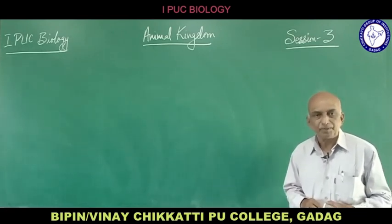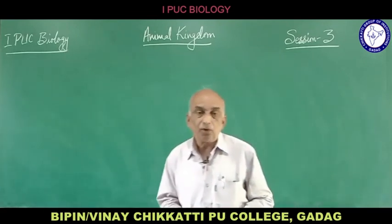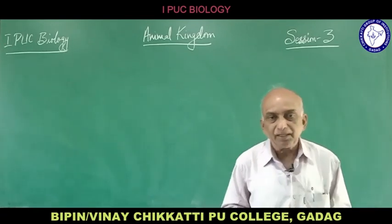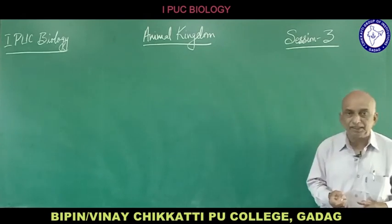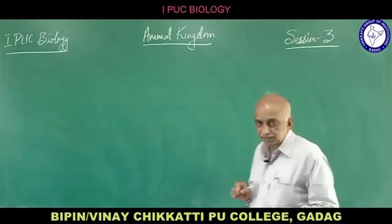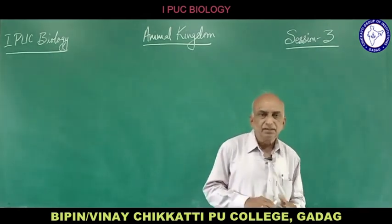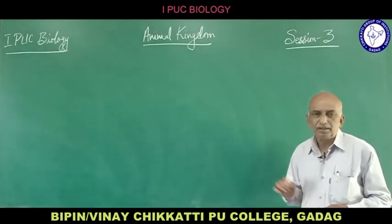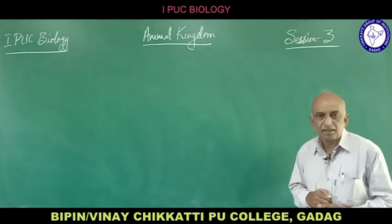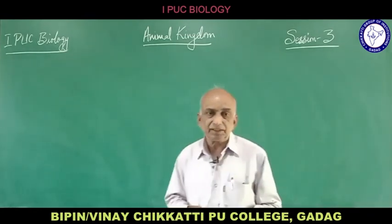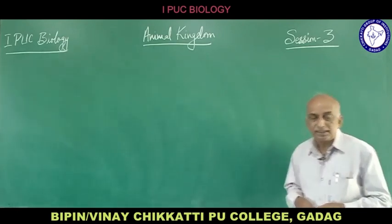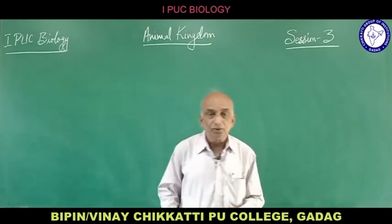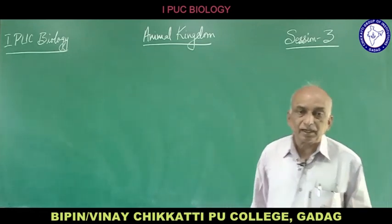The body skeleton of echinoderms is made up of calcareous ossicles. Another important characteristic is the water vascular system, which helps in locomotion, respiration and transport of food material. Sexes are separate; fertilization can be internal or external. Examples include starfish, brittle star, sea urchin and sea cucumber.